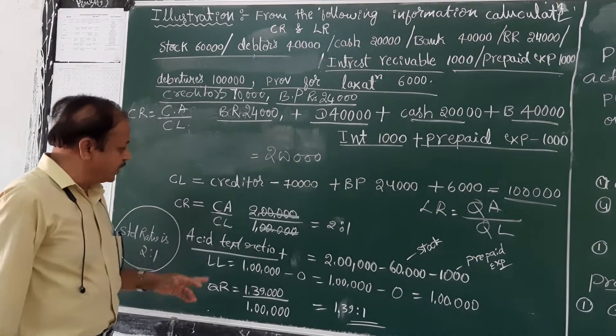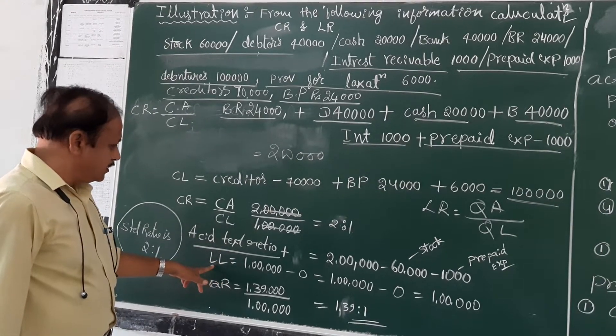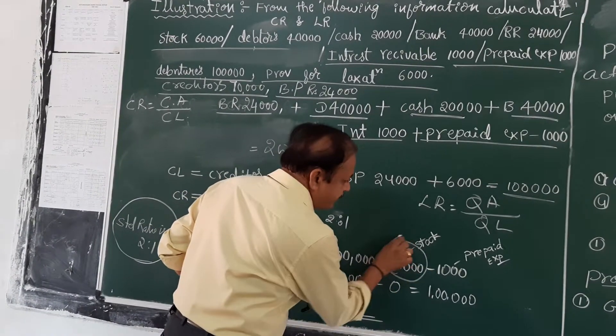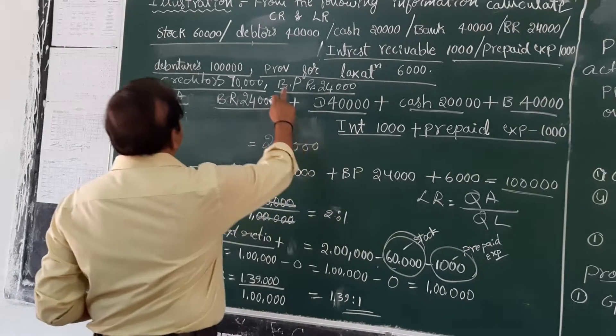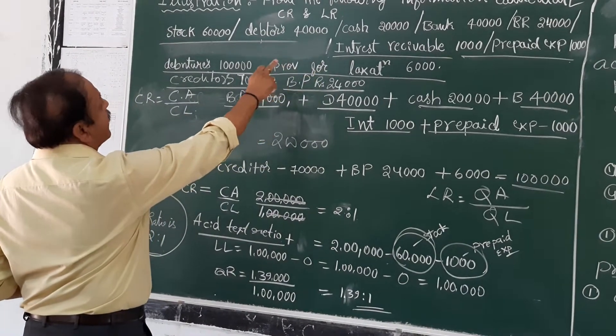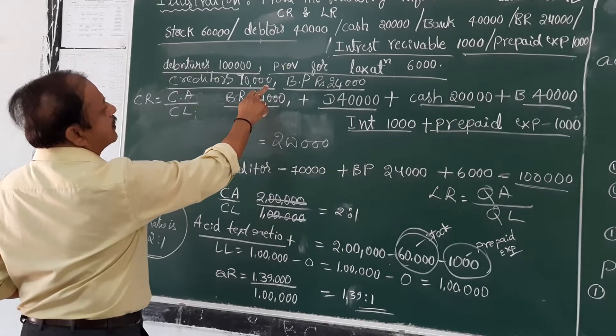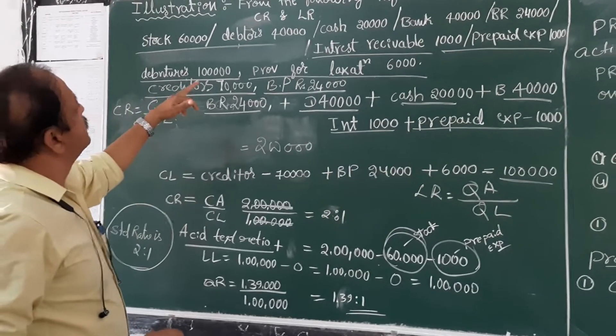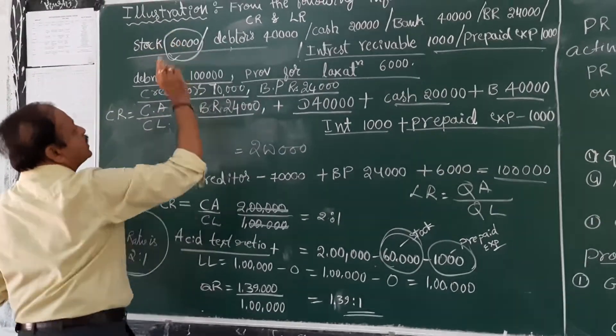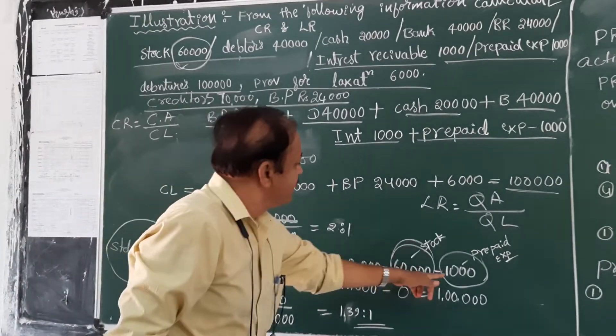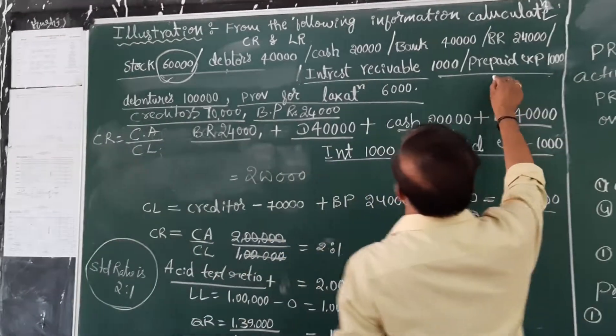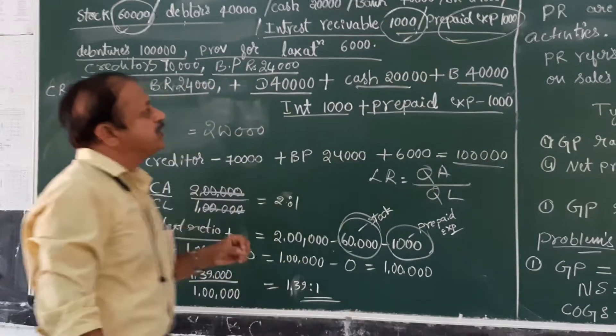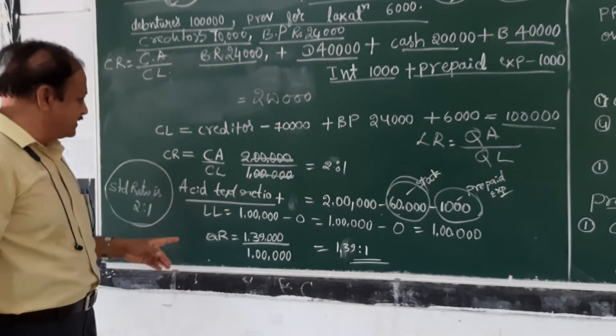Stock is not included. Prepaid expenses is not included. Exclude stock. The second one is prepaid expenses, and interest receivable. These are the items which are excluded from the current assets.